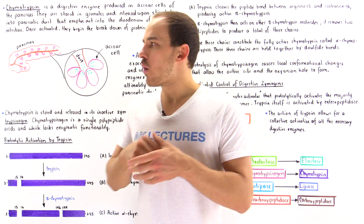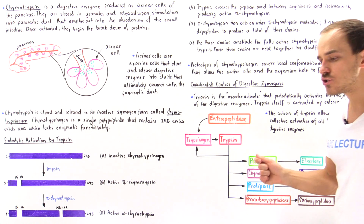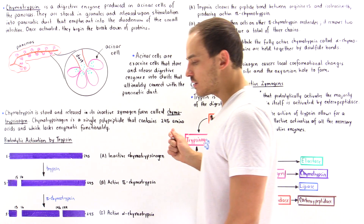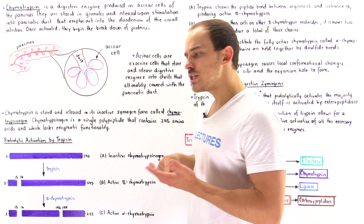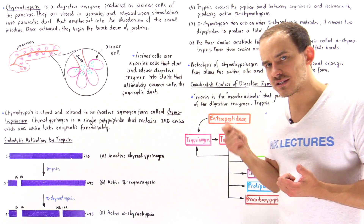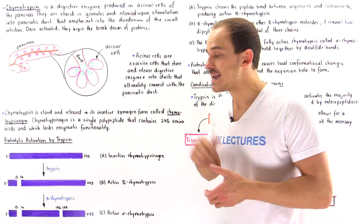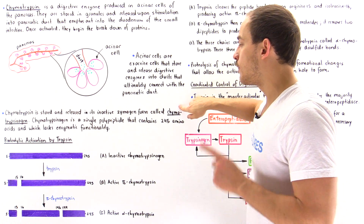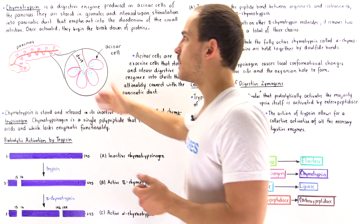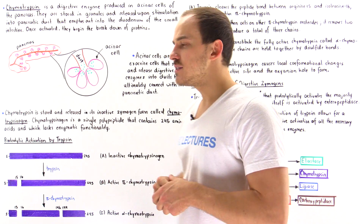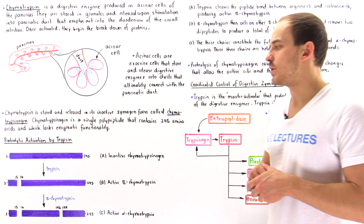So how exactly is chymotrypsinogen activated proteolytically? As it turns out, it is another active digestive enzyme known as trypsin — another protease — that is responsible for activating chymotrypsinogen into its active form, chymotrypsin. Let's look at how that takes place in the following diagram.